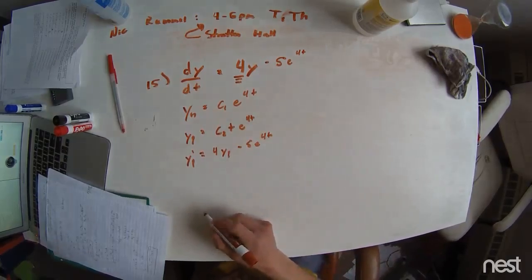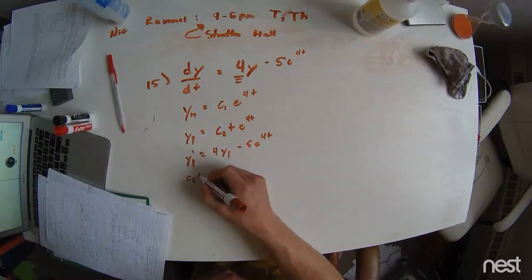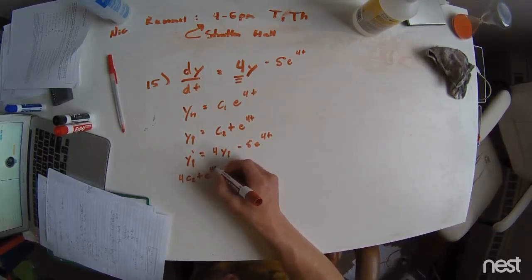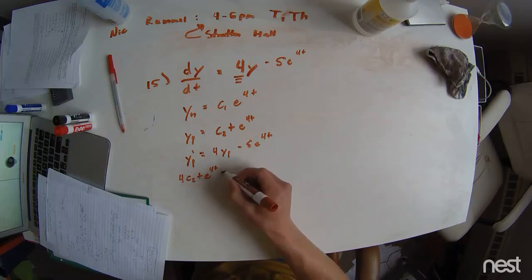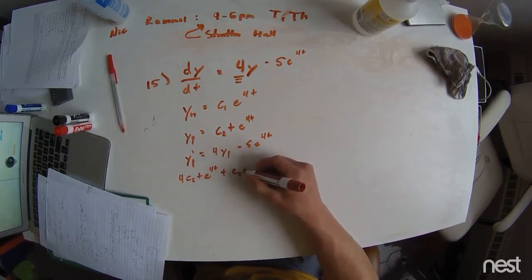We substitute everything in, and we get C2t. There's a 4 that drops down, e to the 4t. But now we have a plus because of product rule, and we have C2e to the 4t.